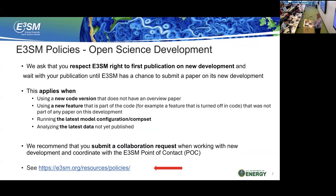For policies: we are an open science development project. We do ask everyone to respect E3SM's right to have the first publication of new developments. This applies when you work with a new code version or use a new feature. Often new features come in the code turned off, so they're not necessarily exercising the newest version of the code even if it has a publication. Everyone should have contact with a point of contact on E3SM to check whether a specific development has a paper or not. Please respect the right for E3SM to have that first publication.